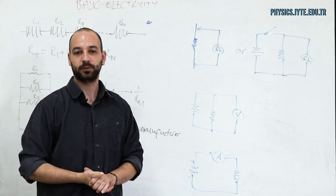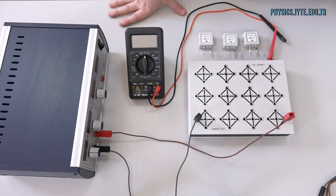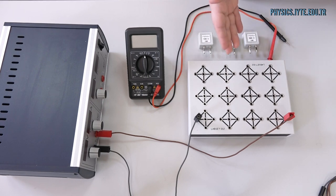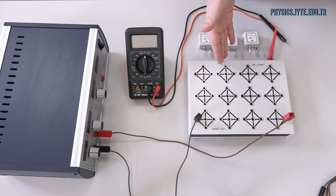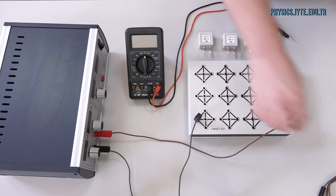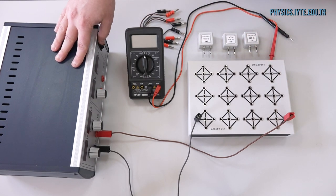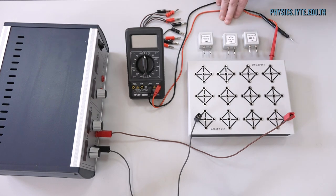Now we can move to the experiment. Before beginning, I will briefly introduce the instruments we are going to use. The equipment consists of an experiment board — more commonly known as a breadboard — connection cables, and a power supply which can provide up to five volts.